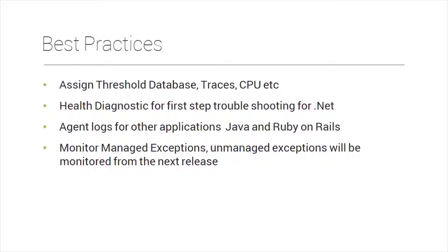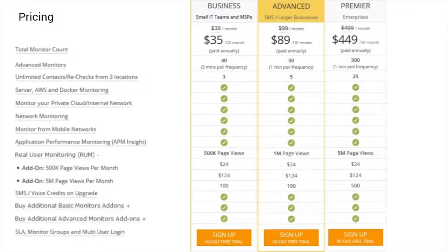Some best practices with APM Insight: assign thresholds for database traces and CPU, use the help diagnostic tool as the first step to troubleshoot .NET agent issues, and refer to agent logs for Java and Ruby on Rails. Managed exceptions can be monitored; unmanaged exceptions will be supported in a future release. For pricing, APM Insight is available from the Business Pack as an advanced monitor — each application instance counts as one advanced monitor, with three instances included in the Business Pack.